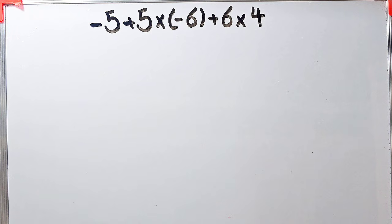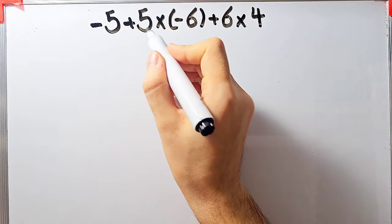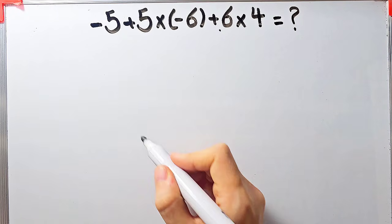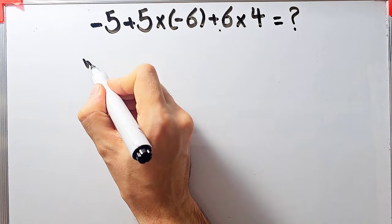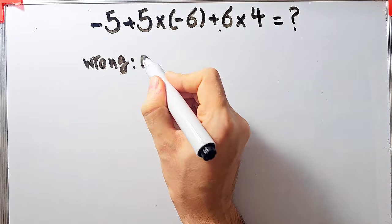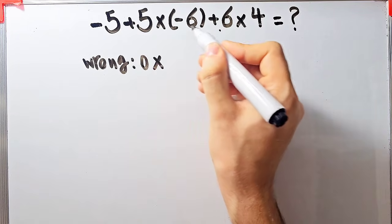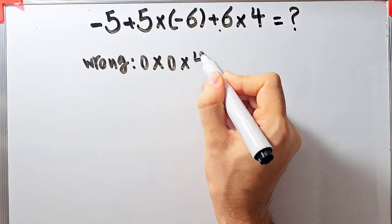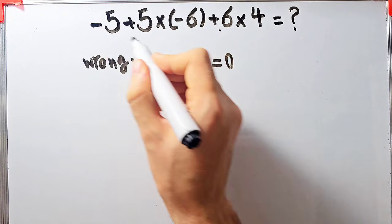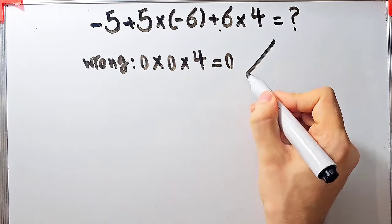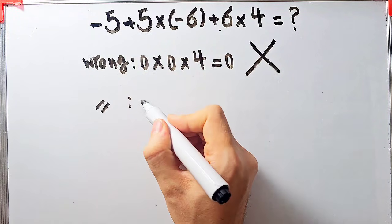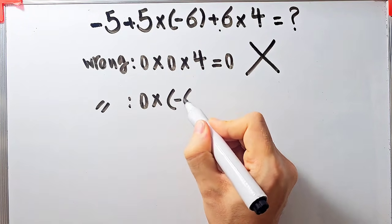In this question we have negative 5 plus 5 times negative 6, plus 6, then times 4. What is the answer? In this question we have addition and multiplication. Some people solve this question like this: negative 5 plus 5 equals 0, 0 times negative 6 plus 6 equals 0, then times 4, 0 times 0 equals 0, and 0 times 4 equals 0. They say the final answer equals 0, but this answer is wrong.